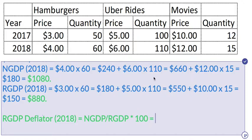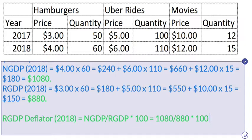In this case, our nominal GDP is 1080, and our real GDP for 2018 is 880. When we multiply that times 100, that gets us 122. What is the interpretation of that number, 122?